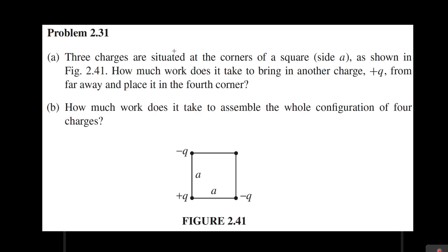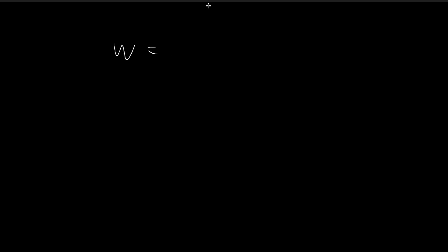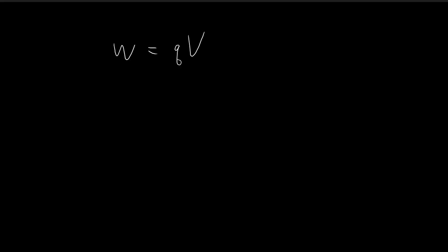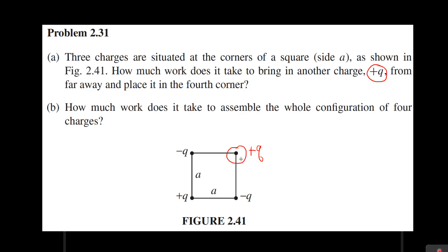In part A of this question, we want to find the amount of work it takes to bring another charge, positive q, to the fourth corner of this square over here. The amount of work required to achieve this is equal to the charge you're trying to bring in, positive q, times the potential at this very point.